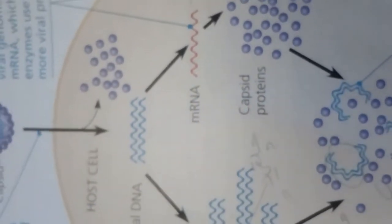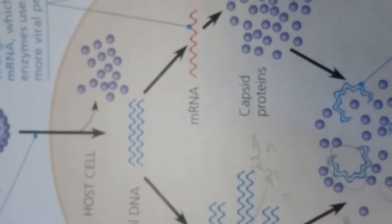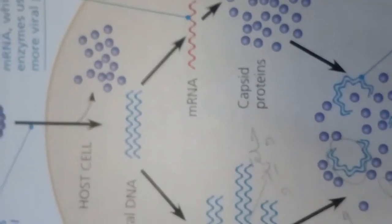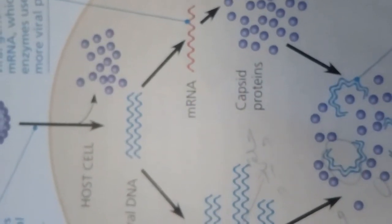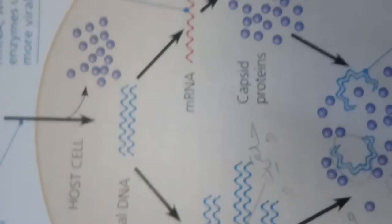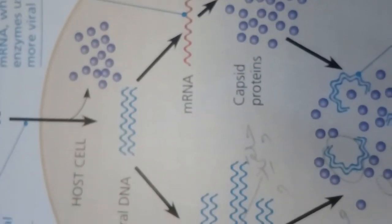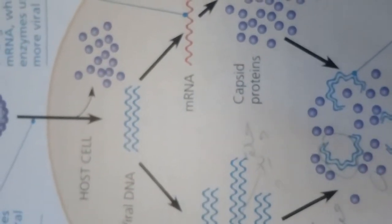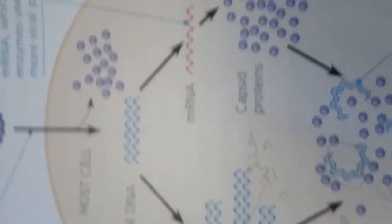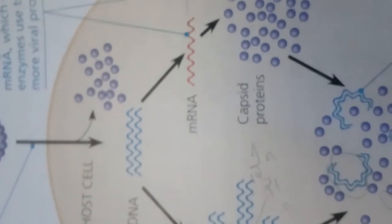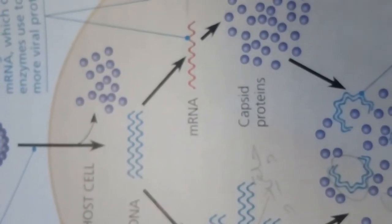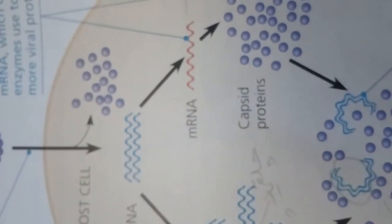Some viruses have broad host ranges. West Nile virus, for example, can infect mosquitoes, bears, and humans. Other viruses have host ranges so narrow that they infect only a single species. Measles virus and polio virus, for instance, can infect only humans.